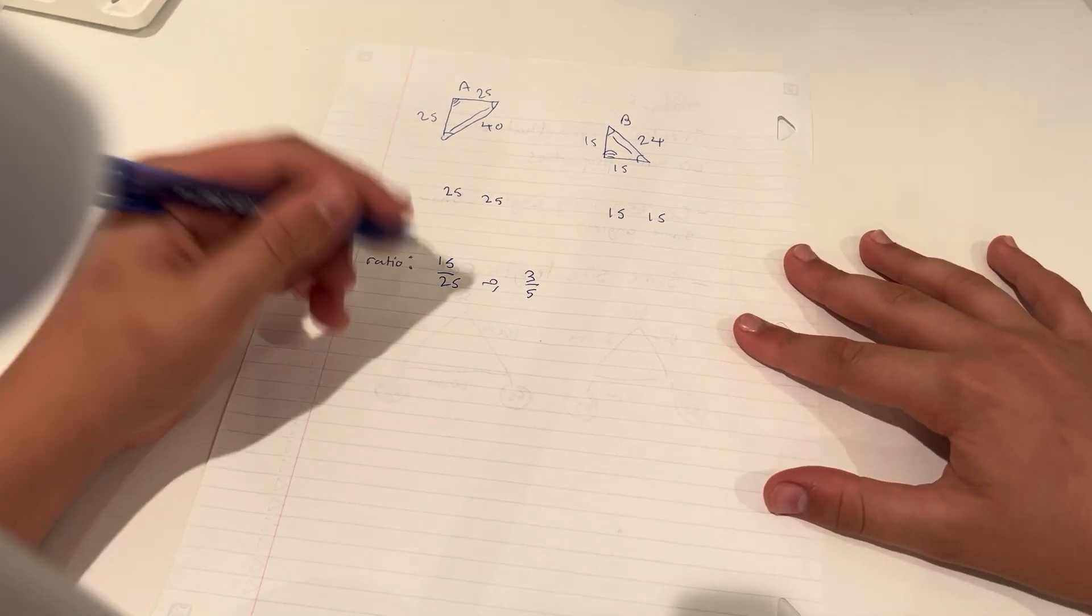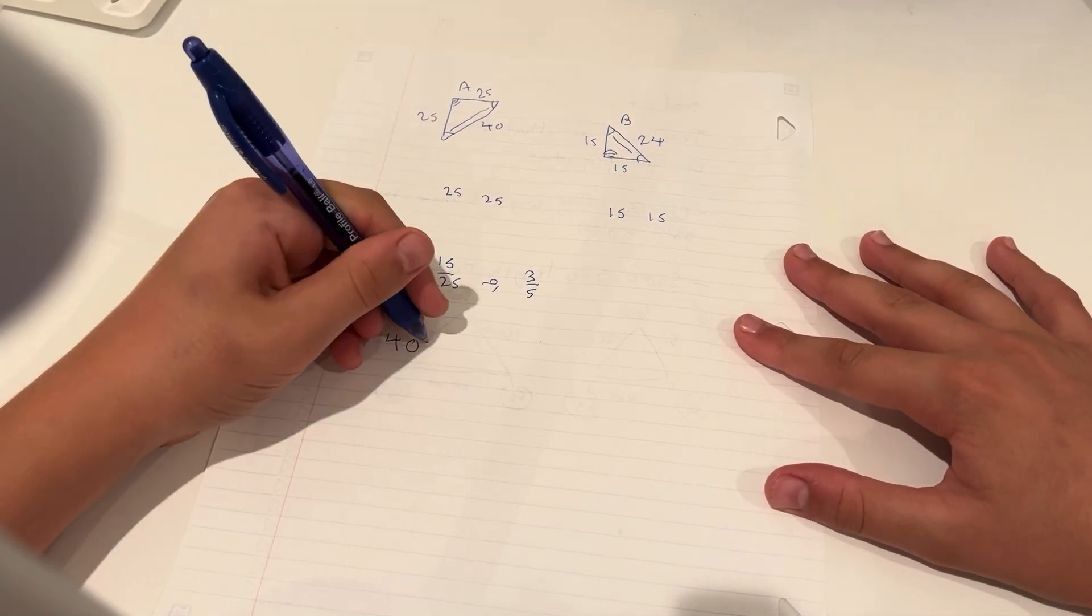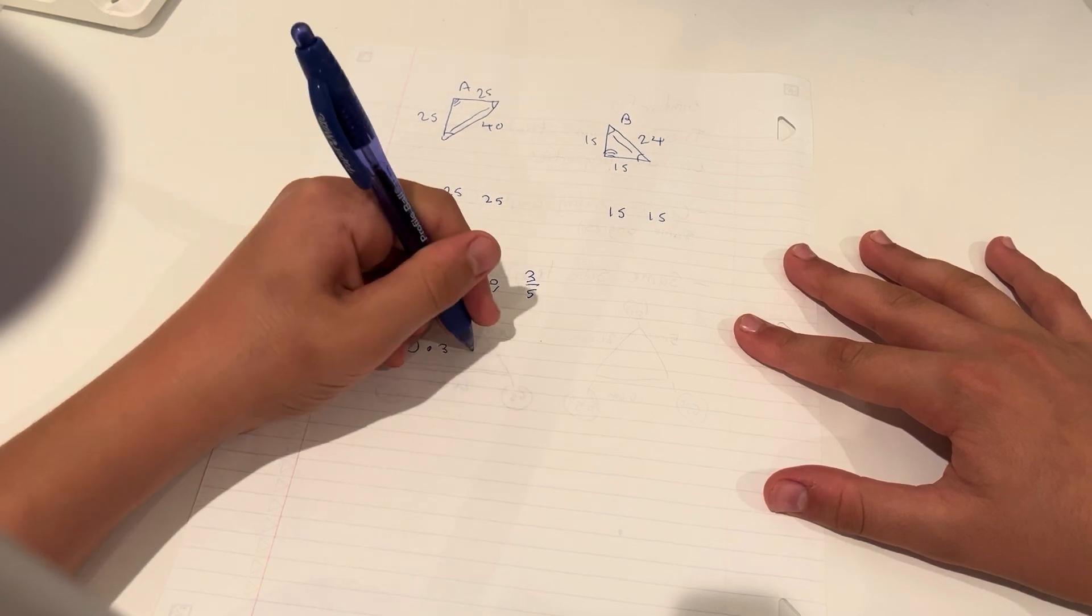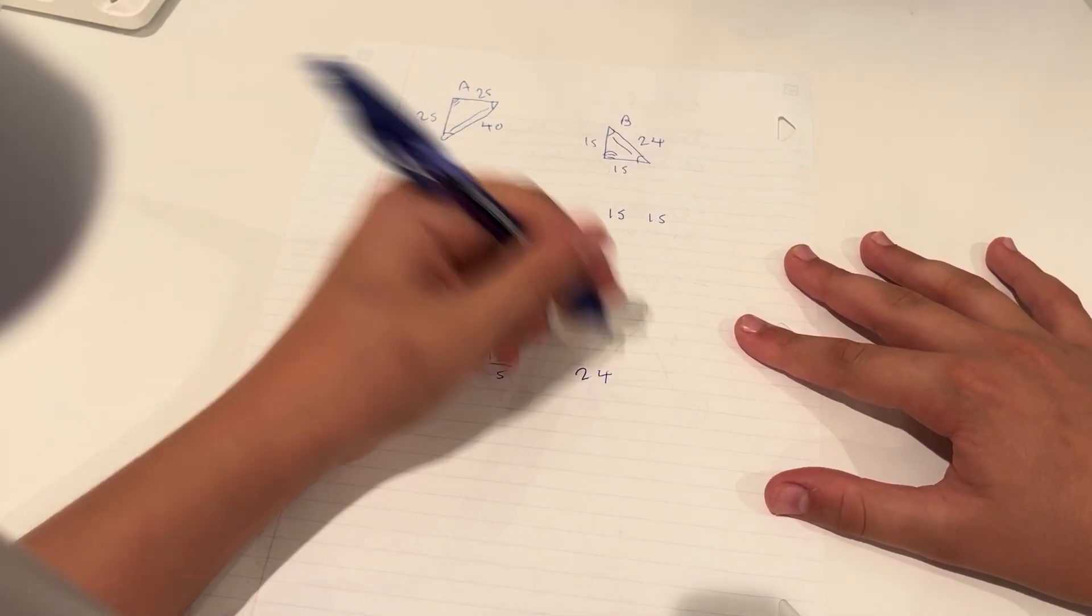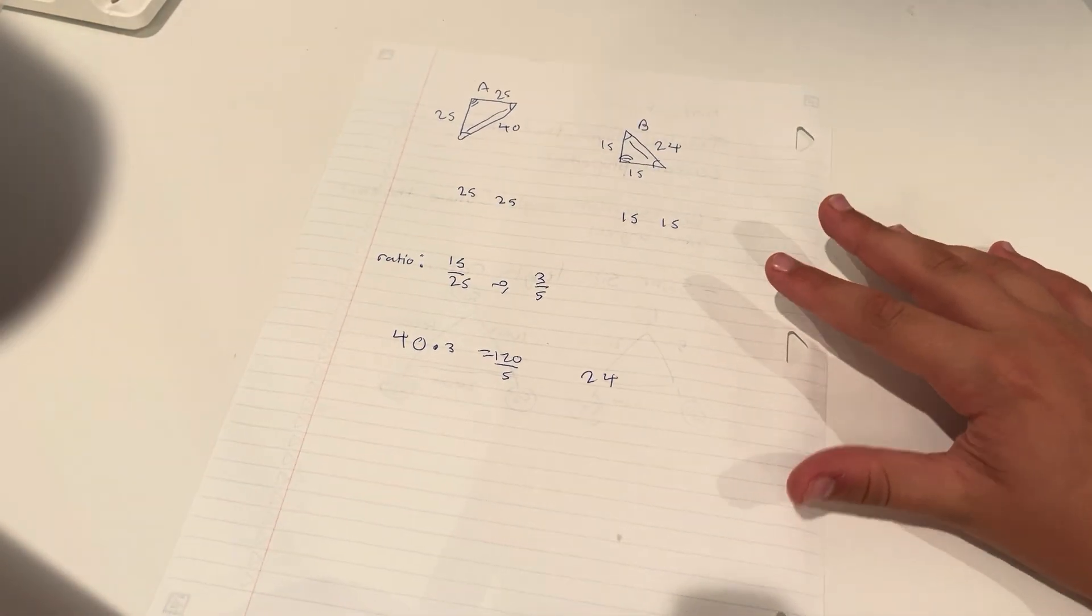Well, let's take a look. We have 40. Let's multiply it by 3, that's 120. And divide it by 5, it becomes 24. So this side length is 24. These two are similar.